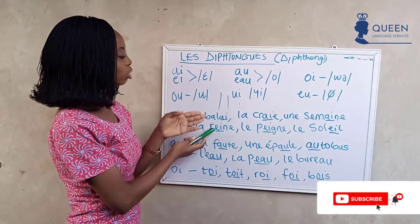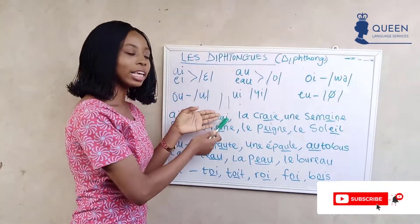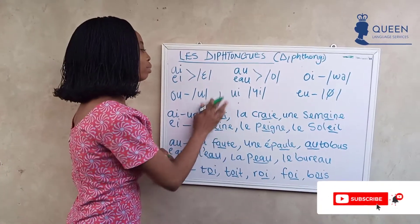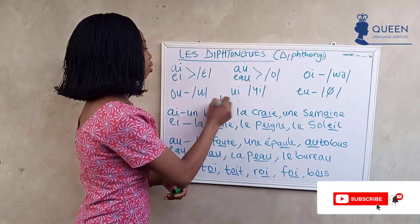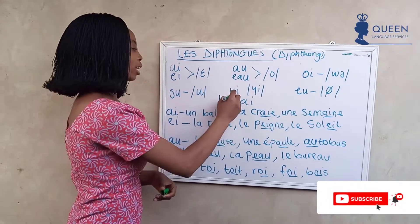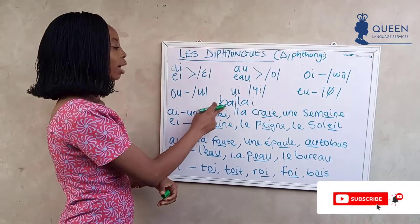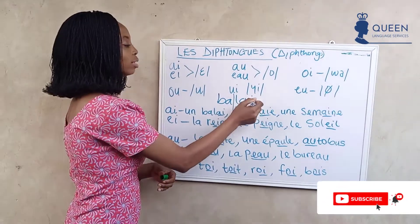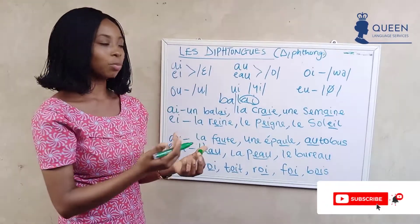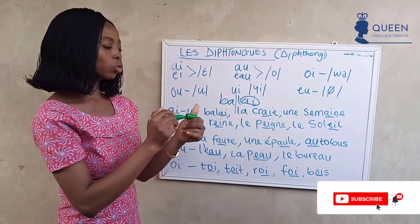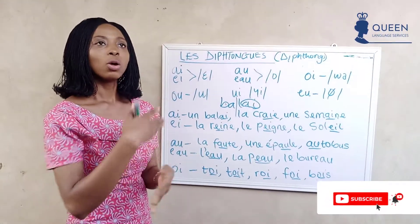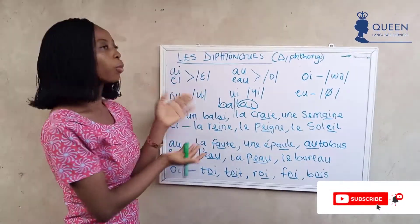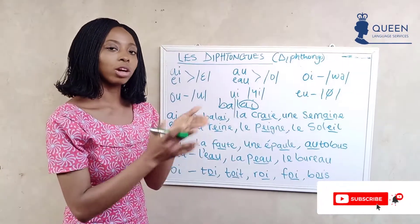Now we are learning that 'ai' and 'ei' give the sound 'eh'. When we have a word like 'ballet', we break it into syllables: 'ba' plus 'lei' — that 'lei' is a diphthong, not separate letters, so it gives the sound 'eh', and we get 'ballet'. This helps us pronounce French words correctly when we read.